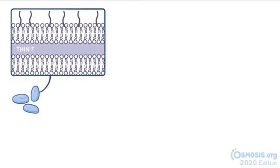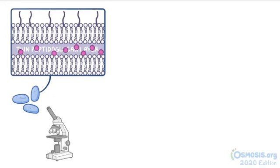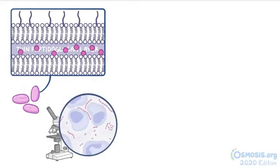Haemophilus ducreyi has a thin peptidoglycan layer, so it doesn't retain the crystal violet dye used during gram staining. Instead, like any other gram-negative bacteria, it stains pink with safranin dye. So under the microscope, the bacteria look like short or relatively long pink rods with rounded ends that usually grow in chains, sometimes compared to a school of fish.